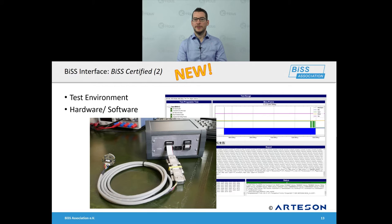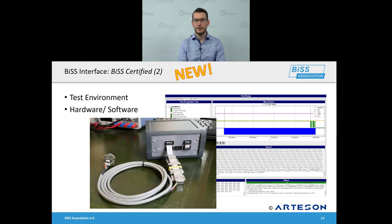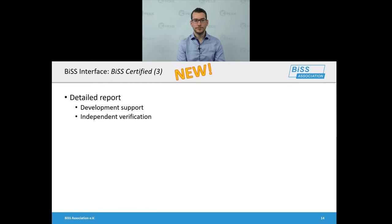Here you can see the test platform used by the certifier, Artezone. In the front picture you can see a prototype of a certification device with the first certified device from Positil Fraber connected to it. In the back you can see the GUI used by the certifier to start test procedures, collect measured data, and display data content graphically. The software is also used to generate a report which will help customers develop proper implementations of the BiSS interface. The service is provided as an independent service, so confidential information will be safe.